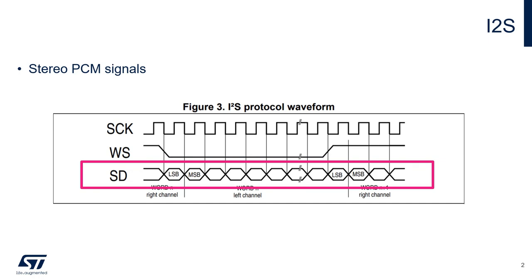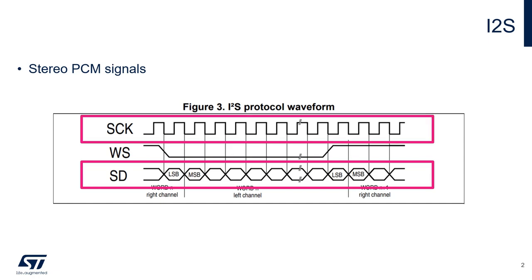For the purpose of PDM microphone acquisition, only two lines are used: the clock line to provide the timing signal to the microphone, and the data line to acquire the data.